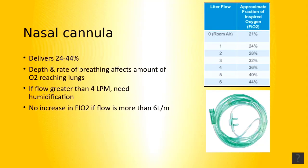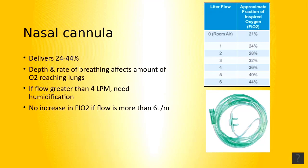The nasal cannula is one of the low-flow oxygen delivery systems, including nasal catheters and transtracheal catheters. We're going to focus on nasal cannula. The standard nasal cannula is a low-flow device that can deliver an FiO2 anywhere from 24% to 44% at supply flows ranging from 1 to 8 liters per minute.